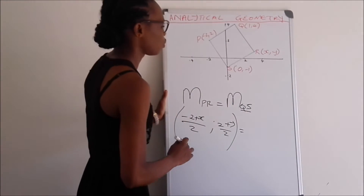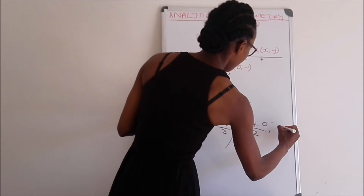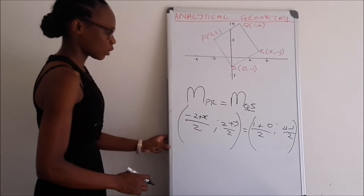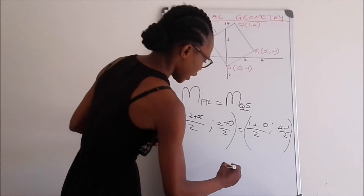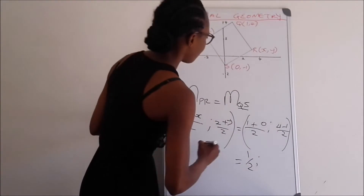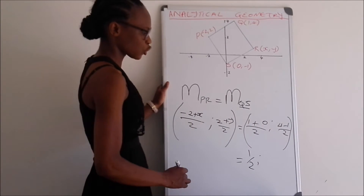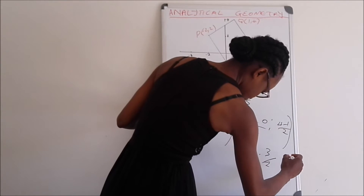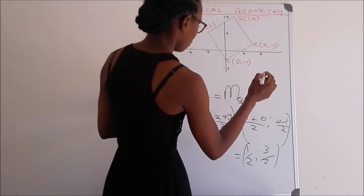This equals the midpoint of QS, which is (1 + 0)/2 and (4 − 1)/2. On the QS side, we can calculate: 1 + 0 = 1, divided by 2 gives us 1/2 for the x-coordinate of the midpoint. For the y-coordinate, (4 − 1)/2 = 3/2. So the midpoint coordinates are (1/2, 3/2).